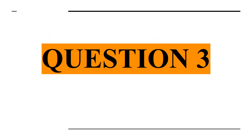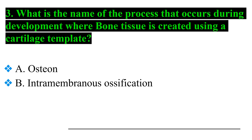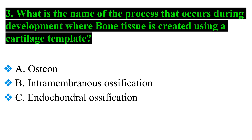Question number three: what is the name of the process that occurs during development where bone tissue is created using a cartilage template? Option A: osteon, Option B: intramembranous ossification, Option C: endochondral ossification, and Option D: ossification. Answer number three: Option C — endochondral ossification.